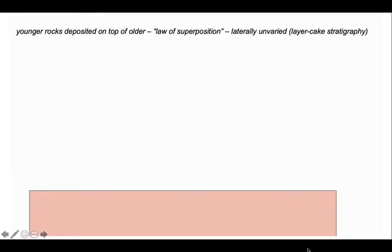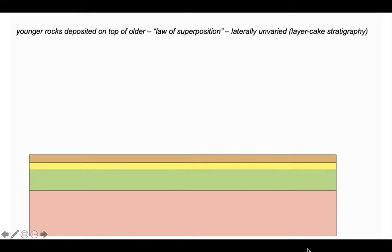So let's build up a rock sequence following the law of superposition, which says that younger rocks are deposited systematically on top of older. In this particular case we've got a simple stratigraphy which doesn't vary laterally, it's a so-called layer cake stratigraphy.